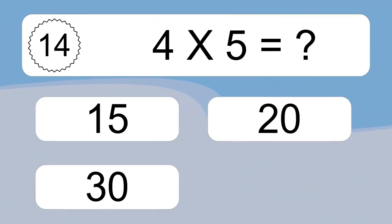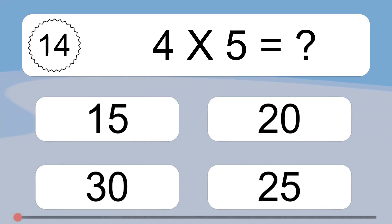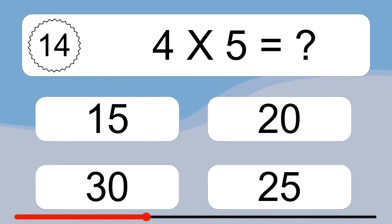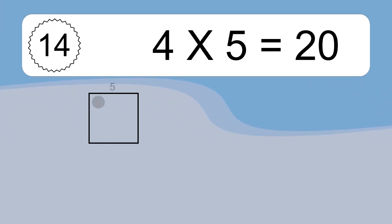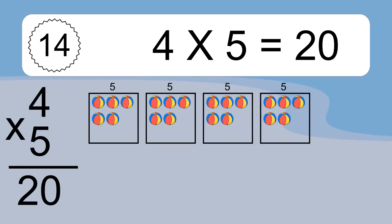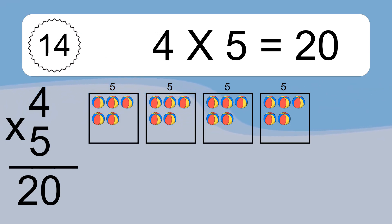Four times five equals what? Four times five equals 20. We have four boxes, and each box has five colorful balls inside. If you count all the balls in all the boxes together, you will have four times five balls. This equals 20 balls.